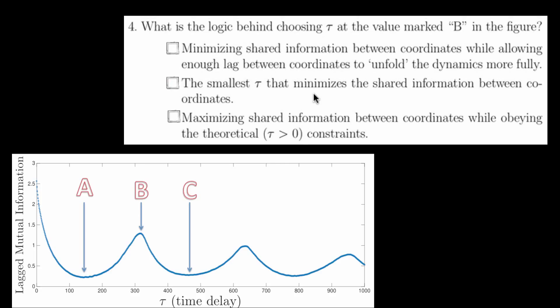Question 4 is the same question but now we're wondering about B. The logic behind choosing B would be to maximize the shared information between coordinates while obeying the theoretical constraint that tau is greater than zero.